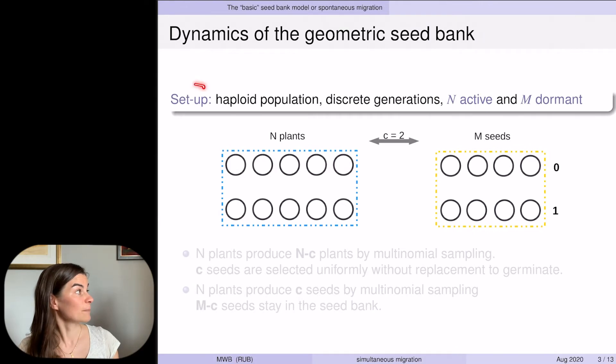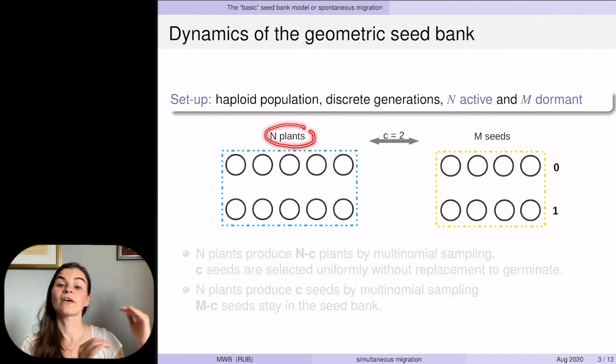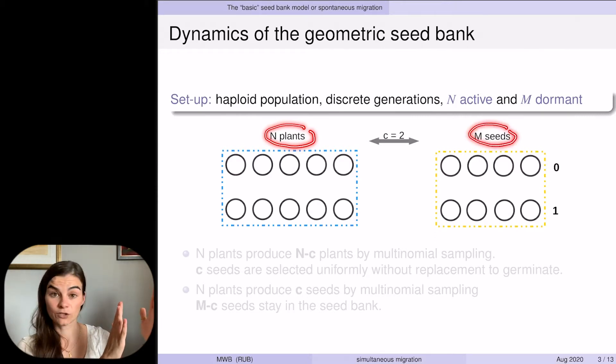So what is the setup here? We have a haploid population, which means each individual has exactly one parent. We have disjoint generations of M active and M dormant individuals, and we have an exchange of C individuals per generation between these two groups.